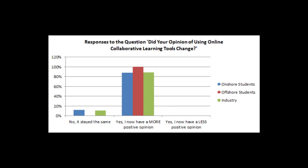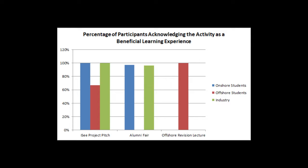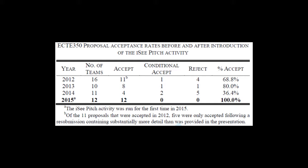Some of the quantitative findings from the three case studies include: almost all participants developed a more positive opinion of online collaborative tools. This in itself provides the community with greater confidence to use such technologies and implement them into the workforce, improving productivity. Almost all participants also believed that the activities were a beneficial learning experience. Considering that almost all industry participants would not have participated if the event had been held on campus, this does showcase the potential of creating new learning opportunities. For example, the IC pitch was shown to have had a substantial impact on learning, evidenced by students presenting a greater initial understanding of their project ideas compared to previous years via a face-to-face academic panel.